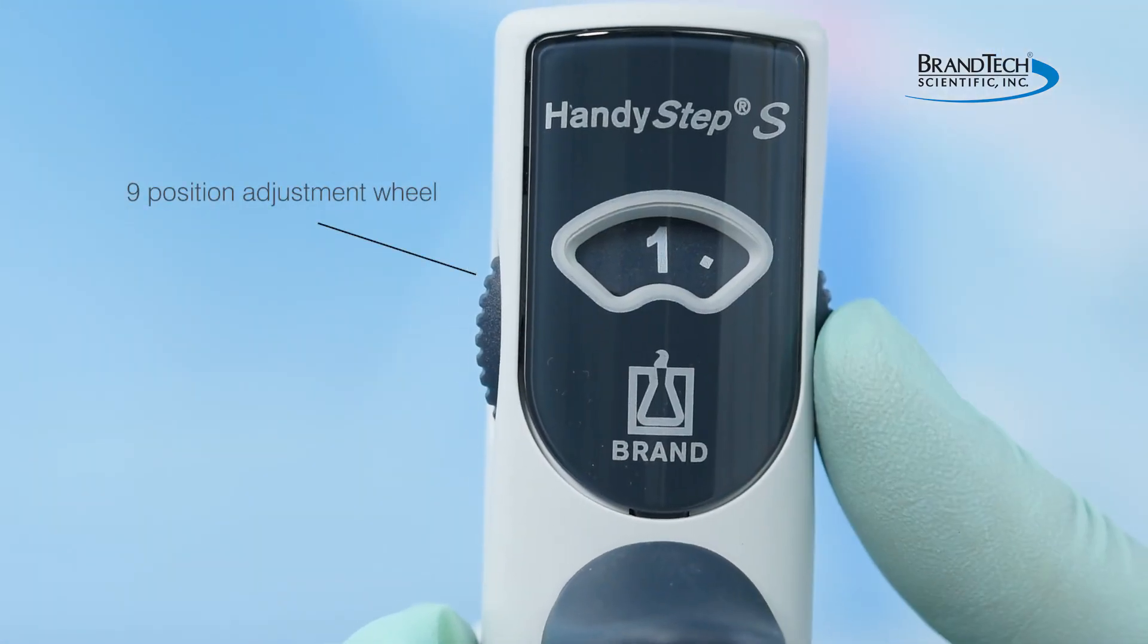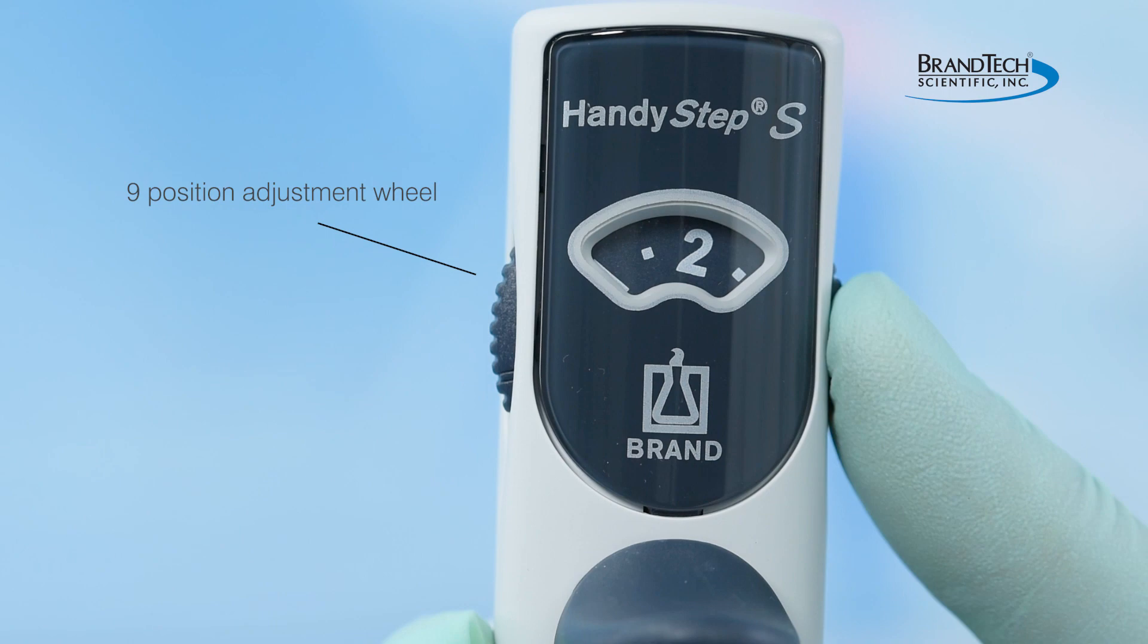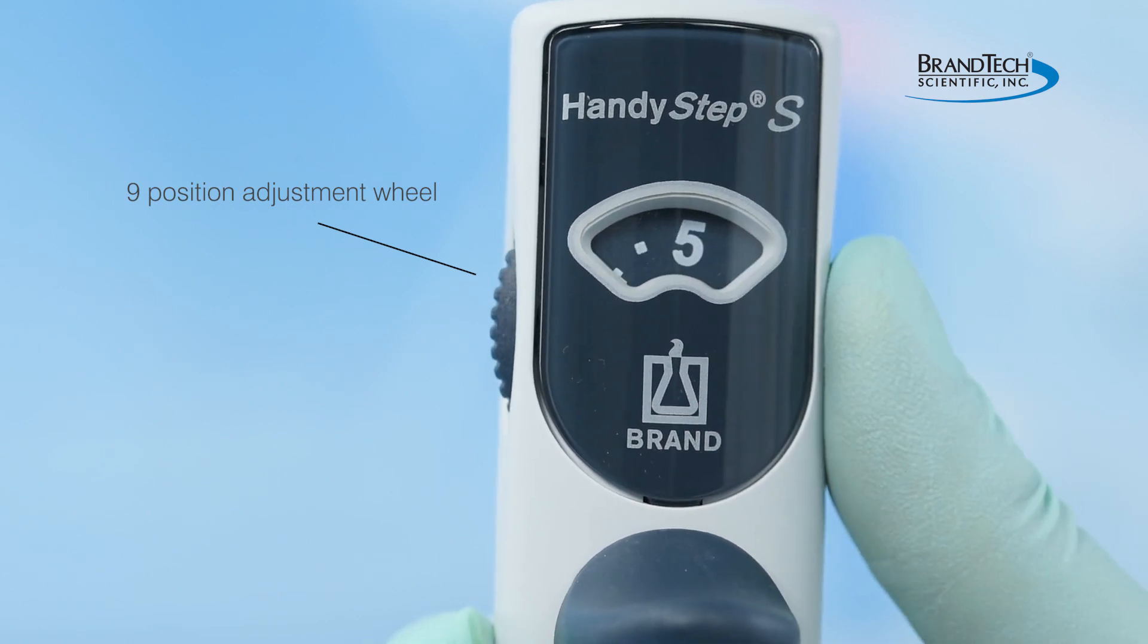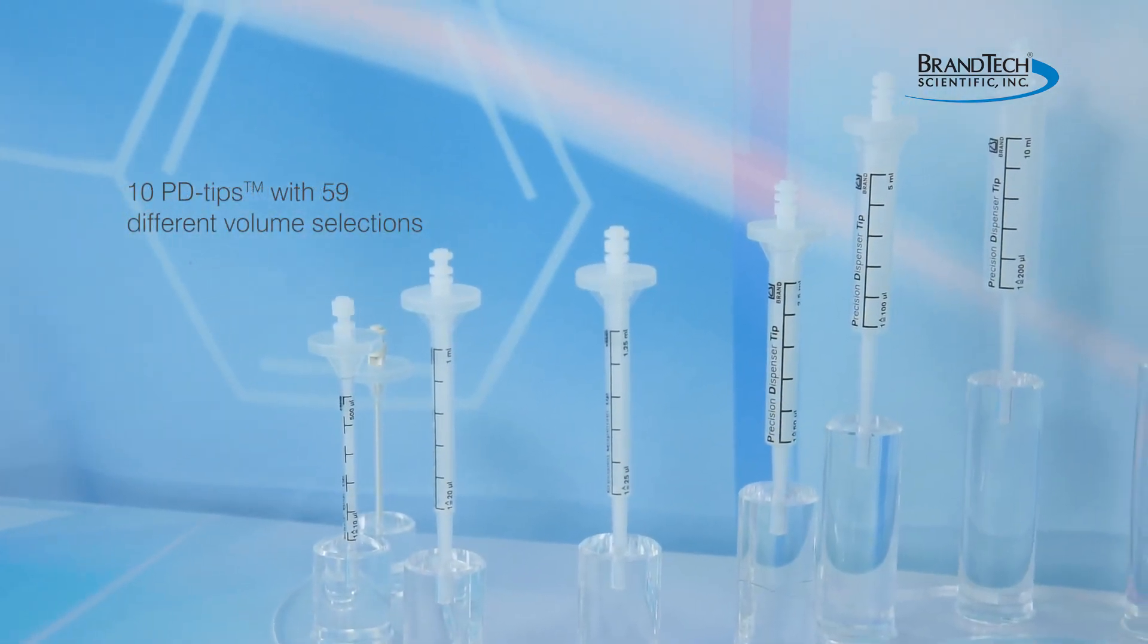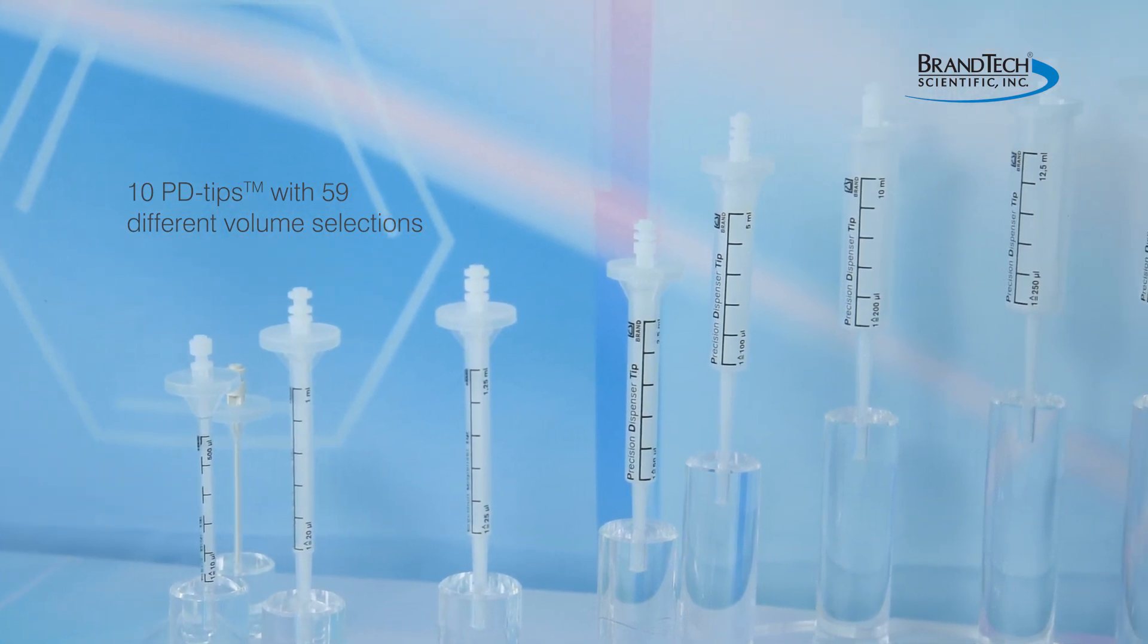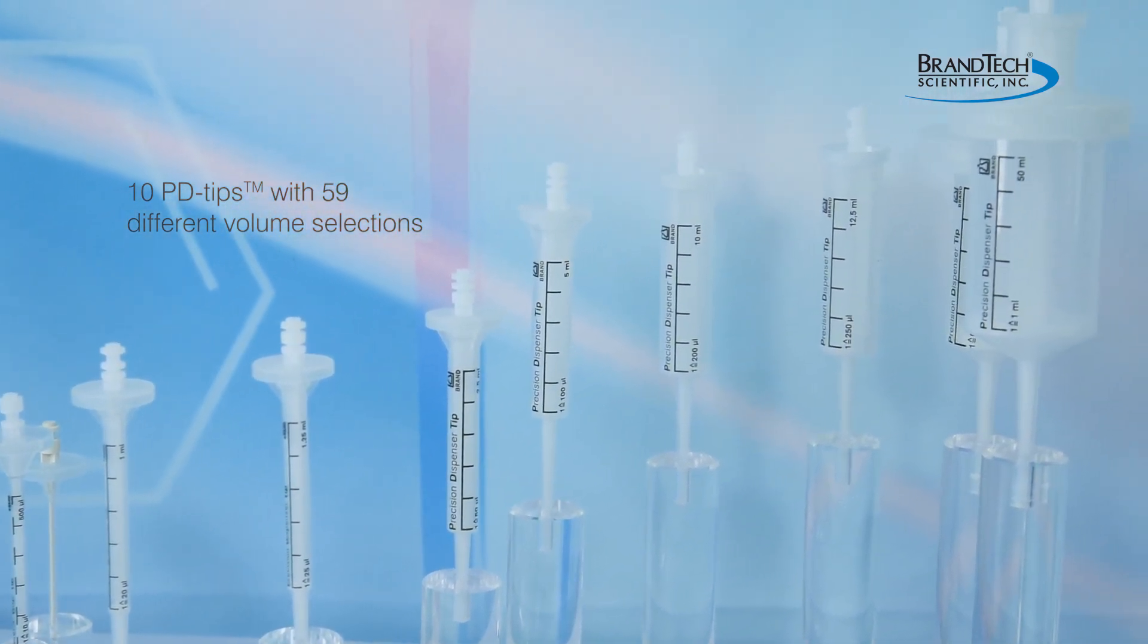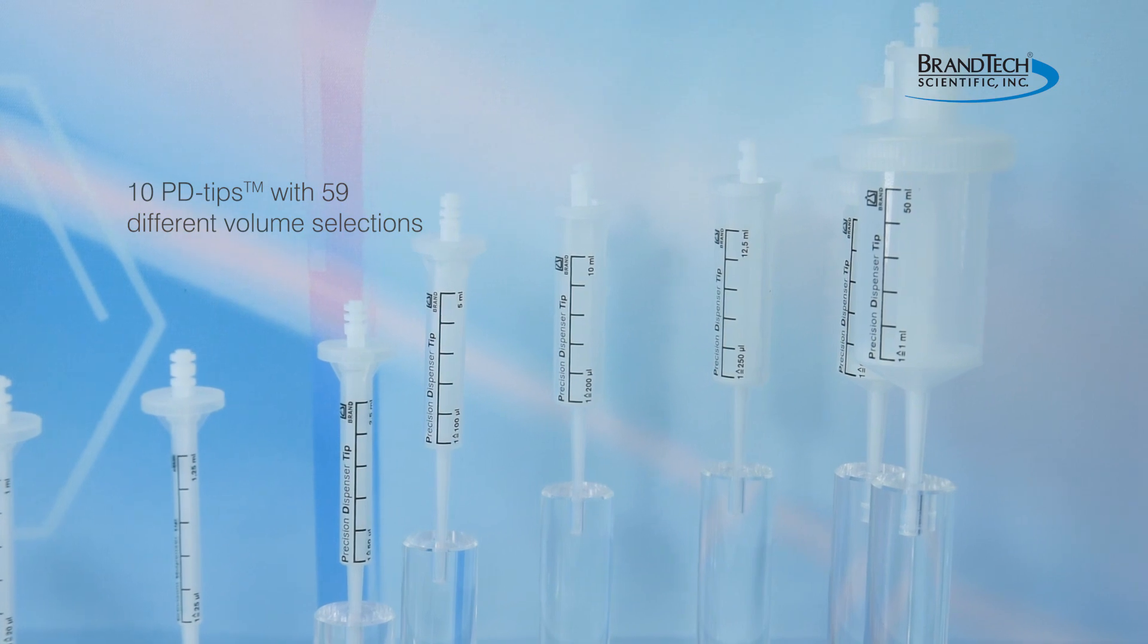The HandyStep S features a nine-position adjustment wheel with settings from one to five increments in half steps. When used in conjunction with the 10 different sized PD Precision dispenser tips, there are 59 different volumes that can be selected.